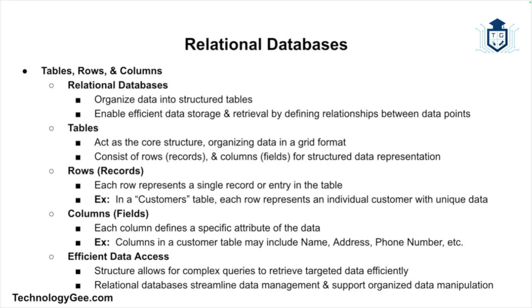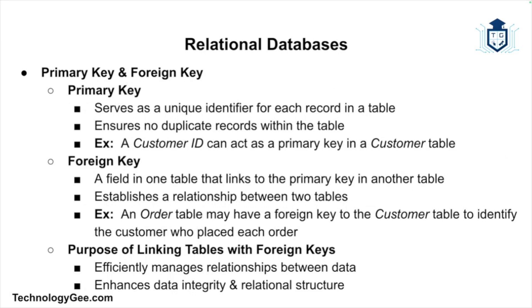Two important types of keys in relational databases are the primary key and the foreign key. A primary key is a unique identifier for each record in a table, ensuring no two records are identical — for example, a customer ID might be the primary key in a customer table. A foreign key is a field in one table that links to the primary key in another table, creating a relationship between the two. For instance, an order table might have a foreign key linking to the customer table to identify who placed each order.